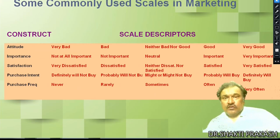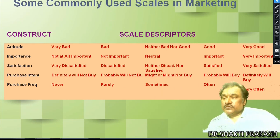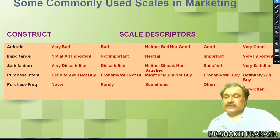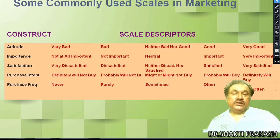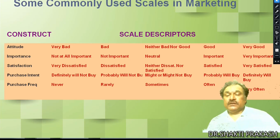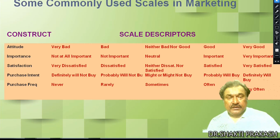Some commonly used scales in marketing measure attitude, importance, satisfaction, purchase intent, and purchase frequency. For example, an attitude scale might range from: very bad, bad, neither bad nor good, good, very good. A purchase frequency scale might use: never, rarely, sometimes, often, very often. These are examples of how questions can be formulated in a questionnaire.